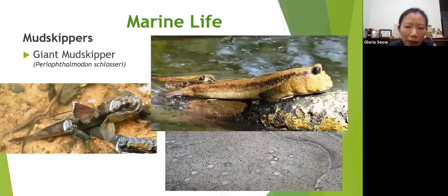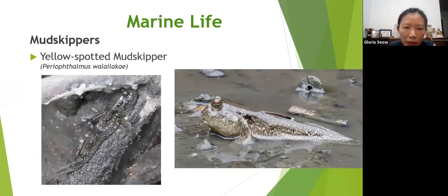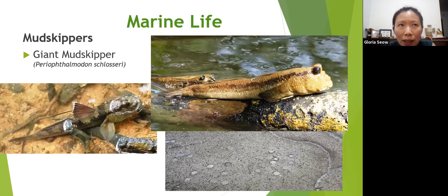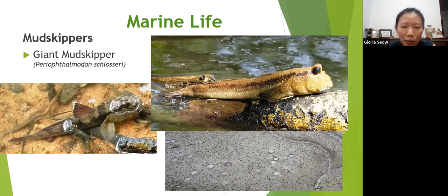The giant mudskipper is a predator that eats worms and similar prey, while the yellow-spotted mudskipper is more of an algae eater. There are also about five more species of mudskipper, such as the blue-spotted, gold-spotted, slender mudskipper, and dusky-gilled mudskipper. The giant mudskipper is even eaten in Taiwan — before eating it you put it into fresh water to remove the muddy taste.